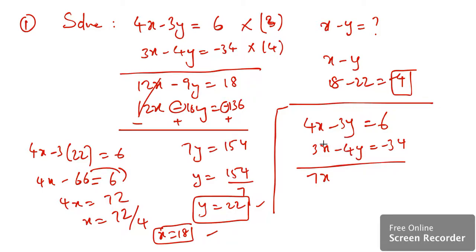Keeping the signs intact: 4 plus 3 minus 3 minus 4 will give me 7x - 7y. Minus 38 plus minus 34 plus 6 will give me negative 28. Now you can see this entire equation can be divisible by 7, so if I divide with 7.